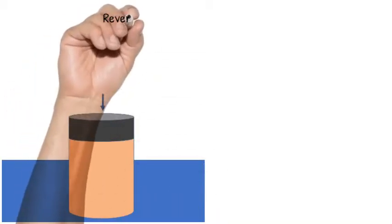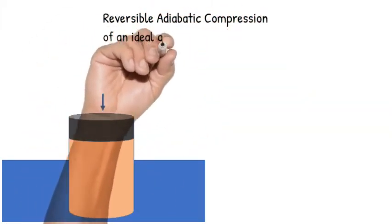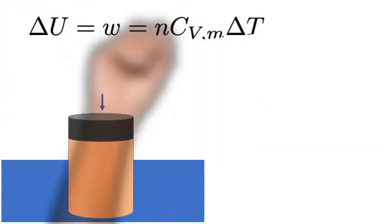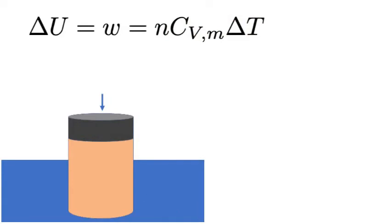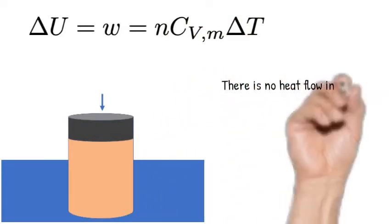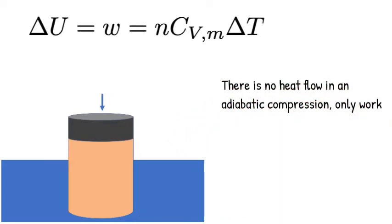Today we're going to talk about the reversible adiabatic compression or expansion of an ideal gas. We can start out by writing the internal energy change, which is just equal to the work because there is no heat flow. There is no heat flow because we're talking about an adiabatic process.